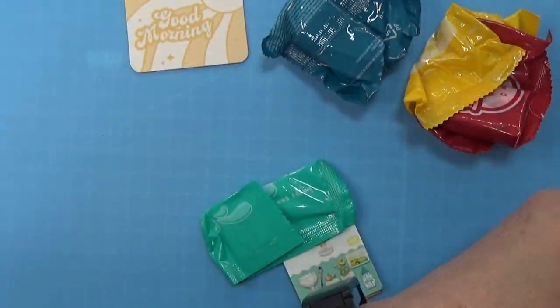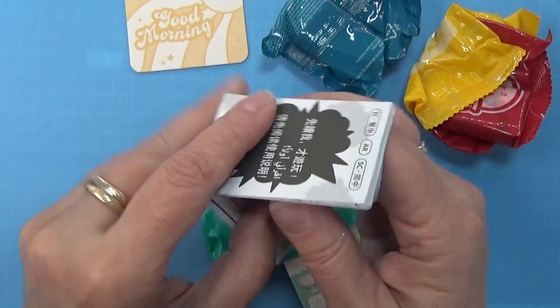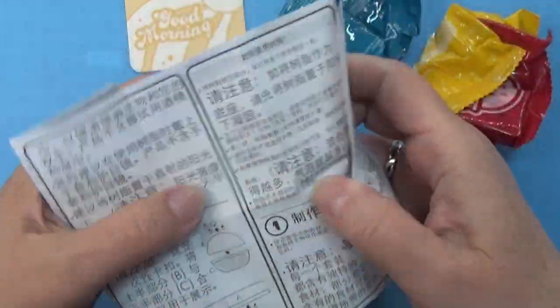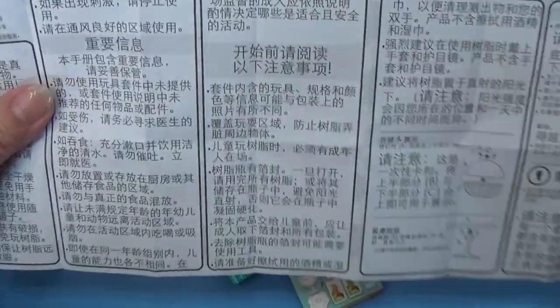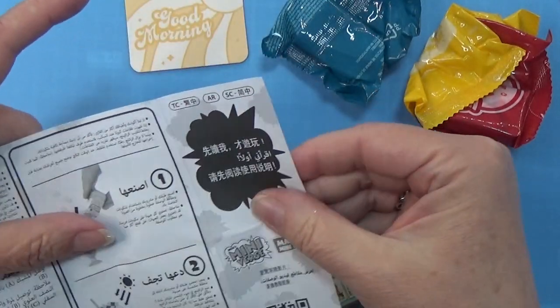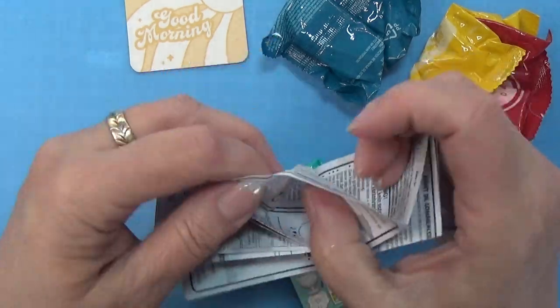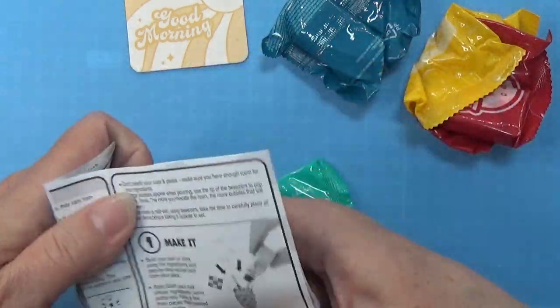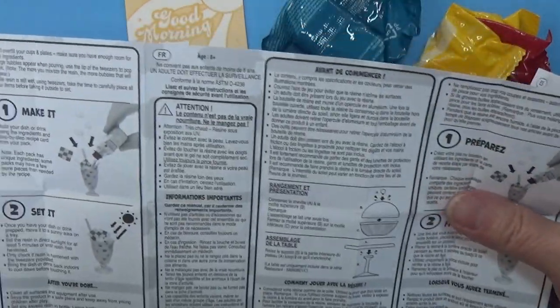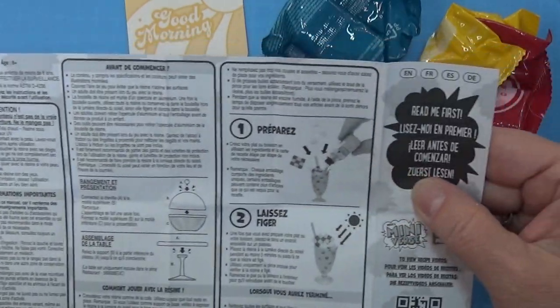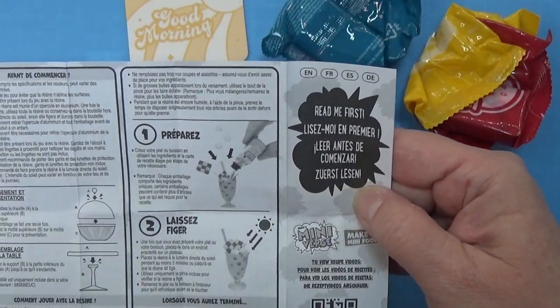That is definitely not a language I can read. Let's see here we have Chinese and four Japanese. Let's see. Nope. There must be a language in here we can read. Yes, here. Make it, set it. Read me first.